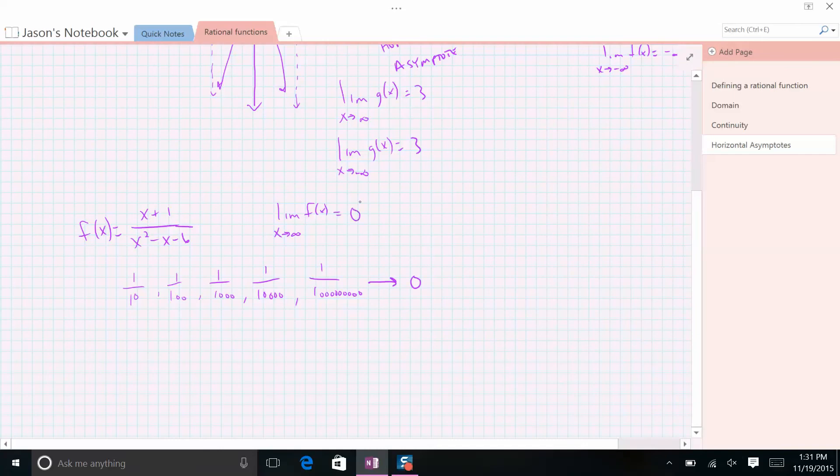So that's the case here. The rule is whenever the degree of the polynomial in the numerator is less than the degree of the denominator, your horizontal asymptote is always, always, always the horizontal line y equals 0.